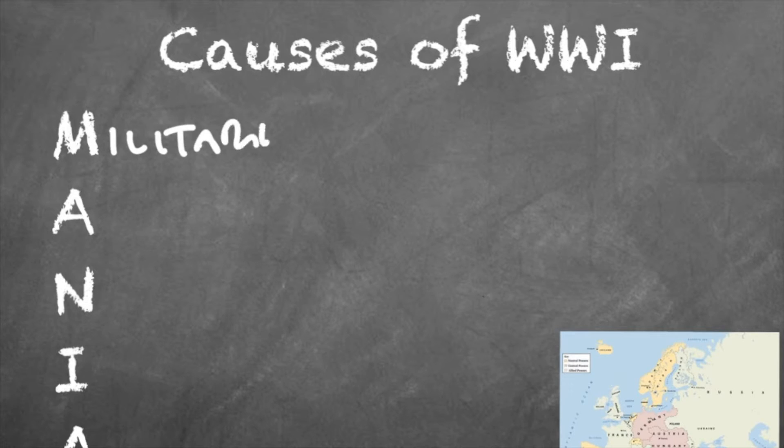Number two: World War One was a war of attrition. A war of attrition means wearing down your opponent — you're not necessarily trying to win, you're trying to outlast your opponent. Make sure you understand that concept and how it affected countries as the war continued for four years.